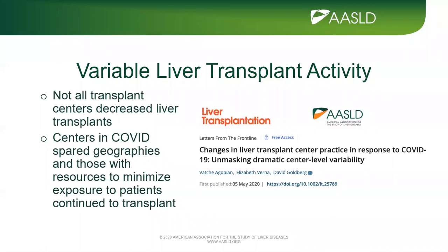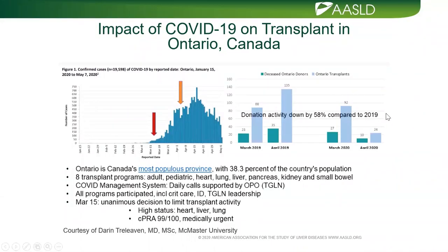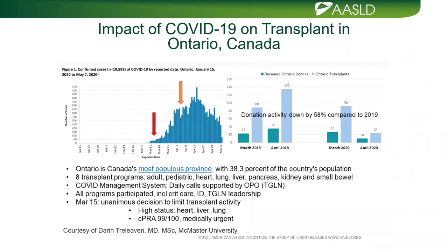Ontario, Canada — the largest province, with eight adult and pediatric transplant programs — experienced a similar drop. They grouped together and collaborated with daily calls to manage the decline in organ donation, which was down 58% compared to 2019 data. The Ontario transplant numbers closely paralleled what was seen in the U.S.